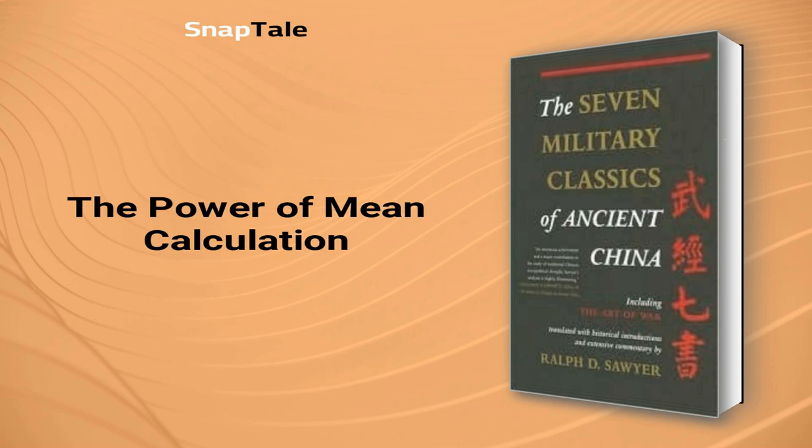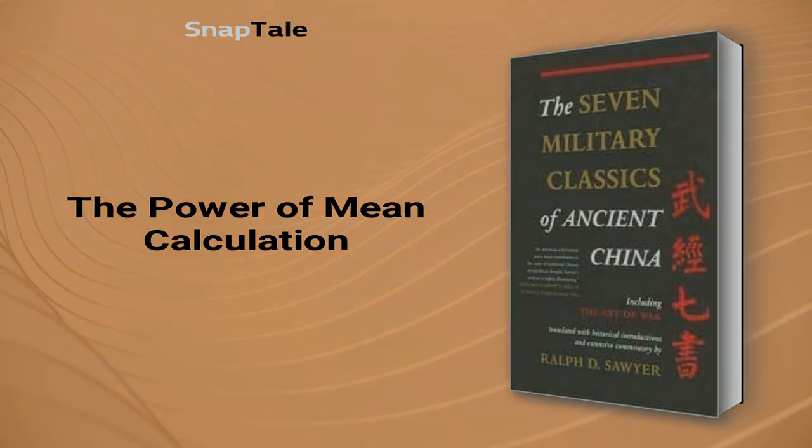The absence of mean calculation yields perfect recall without comprehension or synthesis, as seen in Jorge Luis Borges' short story about a character who had perfect recall but no understanding of events. Ultimately, the power of mean calculation lies in its ability to simplify complex ideas without sacrificing essential information.